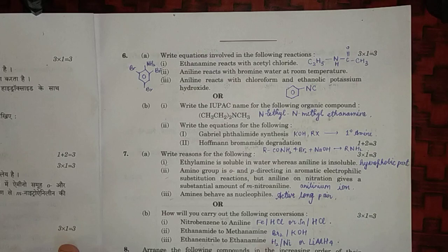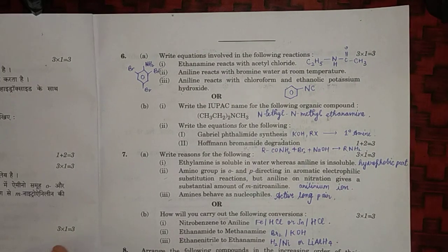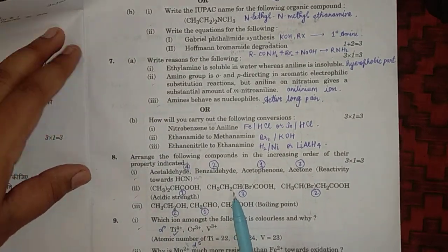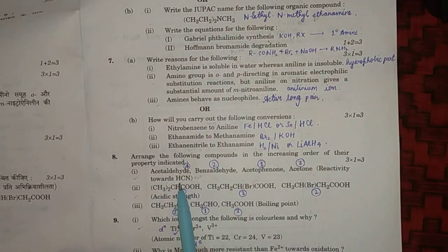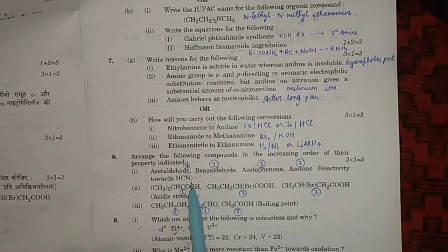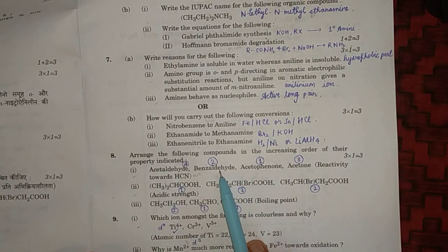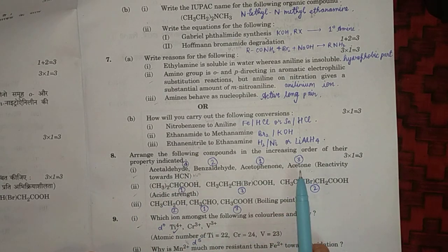Arrange the following compounds in the increasing order of their property indicated. So we have to put it in increasing order, that is from least to the most. First of all, in reactivity towards ethane - ethane is a nucleophilic substitution reaction, so the least will be acetophenone, then benzaldehyde, then acetone, and then acetaldehyde. It is based on the +I effect.